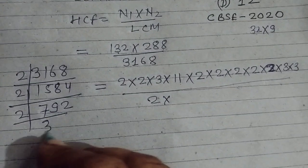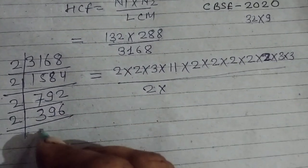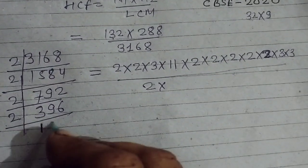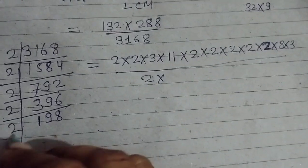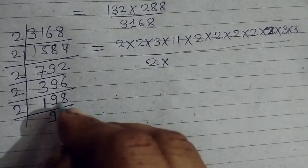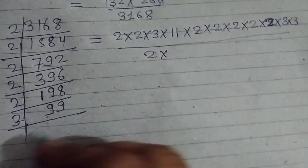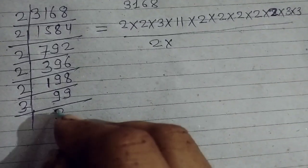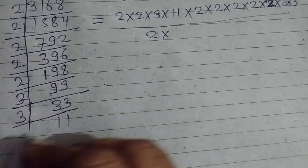Again dividing by 2 we get 396, then 198, then 99. Dividing by 3 gives 33, then 11. So the factors are 2 to the power 5, times 3 squared, times 11.